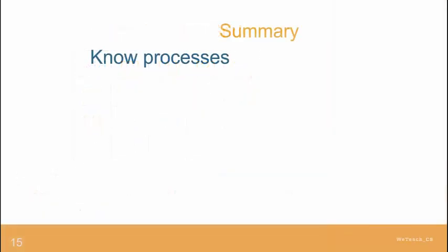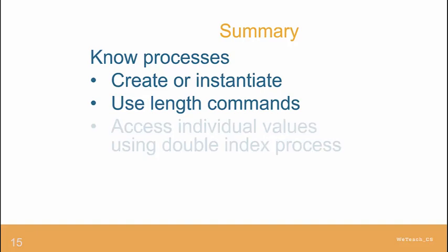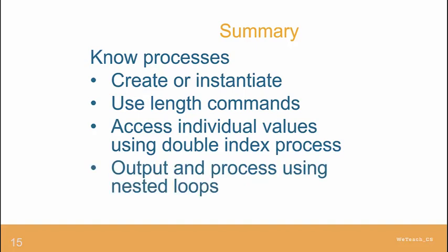In summary, you need to know how to process a two-dimensional array, specifically how to create one with the data type that you need. Use the length method or process to check the number of rows or the number of columns in each row. To access the individual elements of the grid, either to use them in a process or to change the element value, using the double index process, and then use a nested loop to process the entire grid, either outputting them or including them in some sort of calculation process.